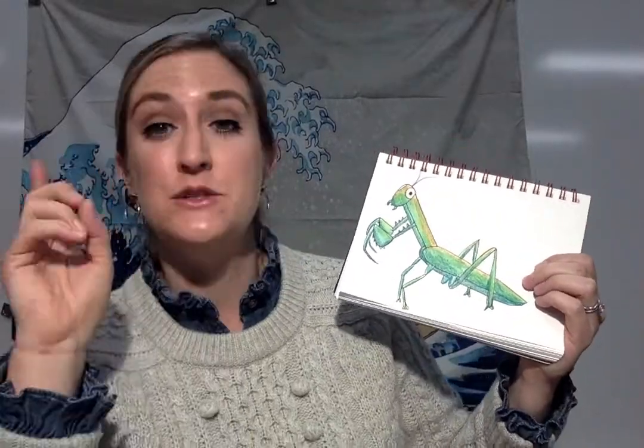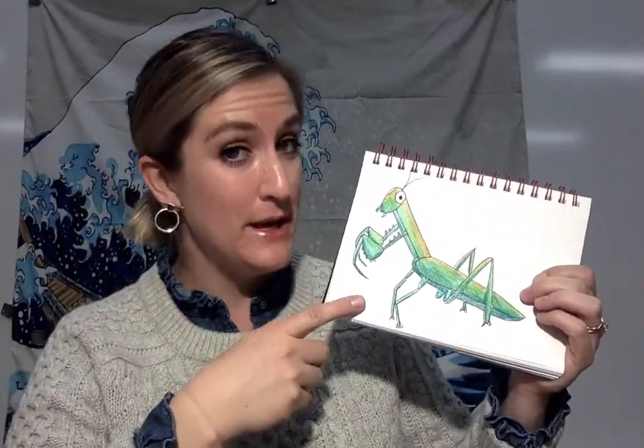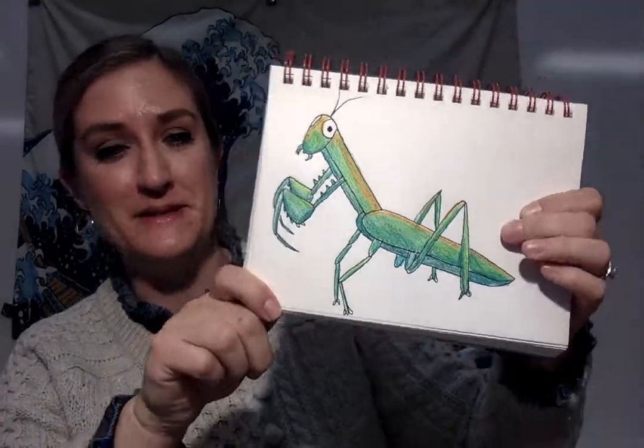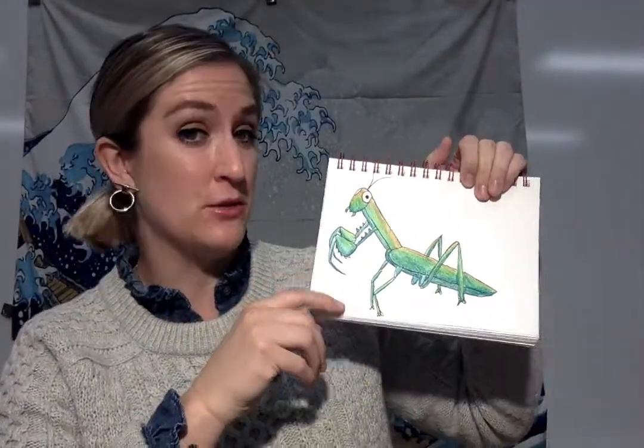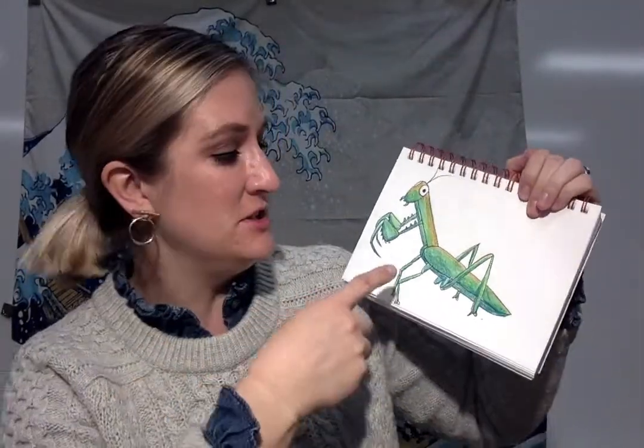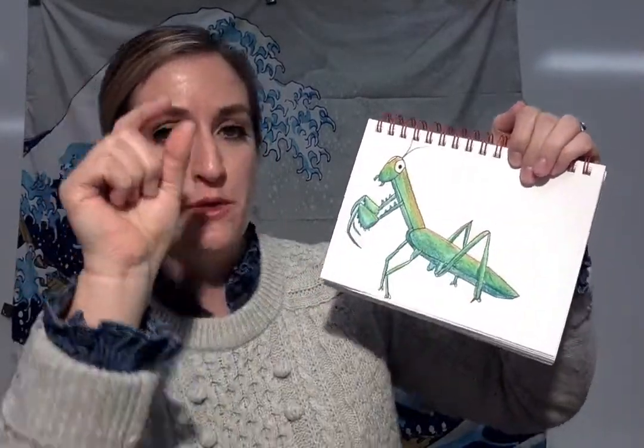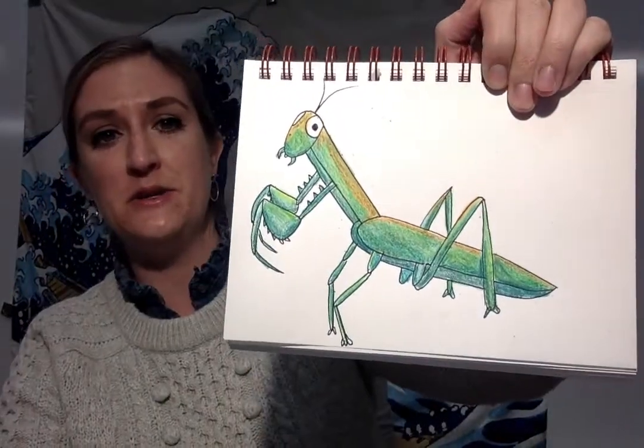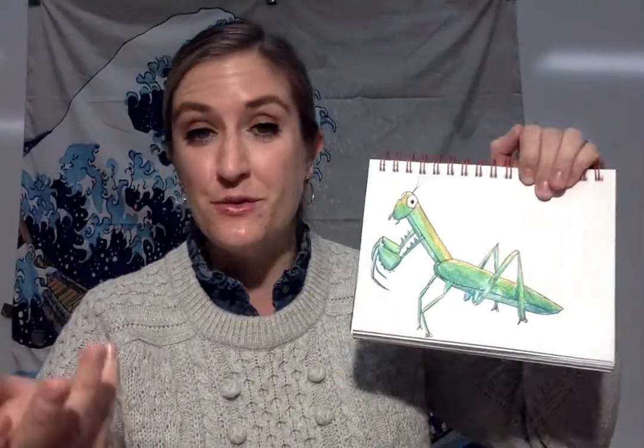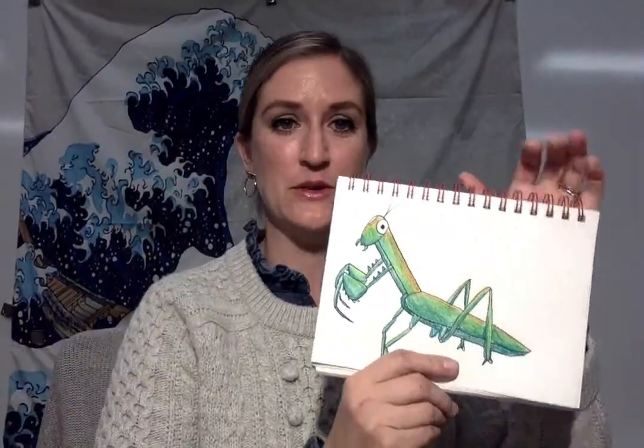All right, hi students. Today we're going to draw a praying mantis. It looks like a really complicated bug, but actually it's just a series of long rectangular shapes and smooth lines that all connect to each other. I used crayon to color mine, but you can use whatever you'd like.